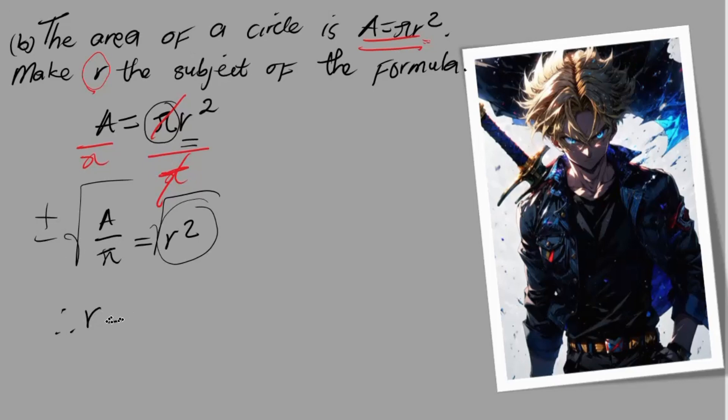My conclusion is that r is going to be positive √(A/π) that is under a square root, or r is going to be negative √(A/π). This is literally solved, that's it.